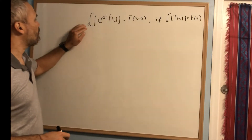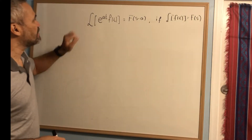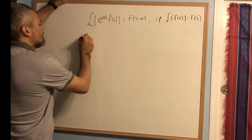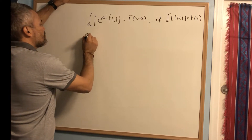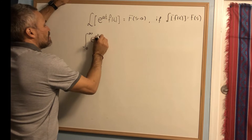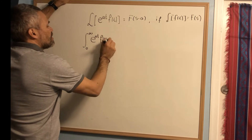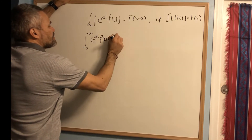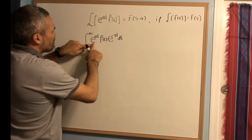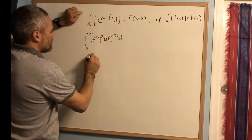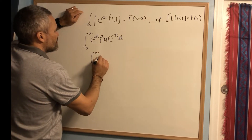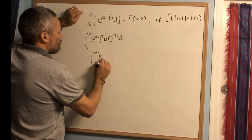In this video we will explain this formula. By definition, the Laplace transform of e^(at) f(t) is the integral from 0 to infinity of e^(at) f(t) e^(-st) dt. Using properties of the exponential function, we can combine these two and get the integral from zero to infinity of f(t) e^(-(s-a)t) dt.